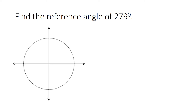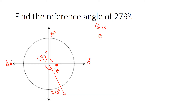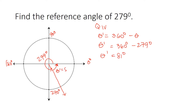Next, we find the reference angle of 279 degrees. Locating the angle: 0, 90, 180, 270 degrees, and 279 is somewhere just past 270, in the fourth quadrant. The angle created is 279 degrees, and the reference angle goes from the terminal side to the x-axis. Since this is on quadrant 4, the reference angle equals 360 degrees minus the angle: 360 minus 279 equals 81 degrees.